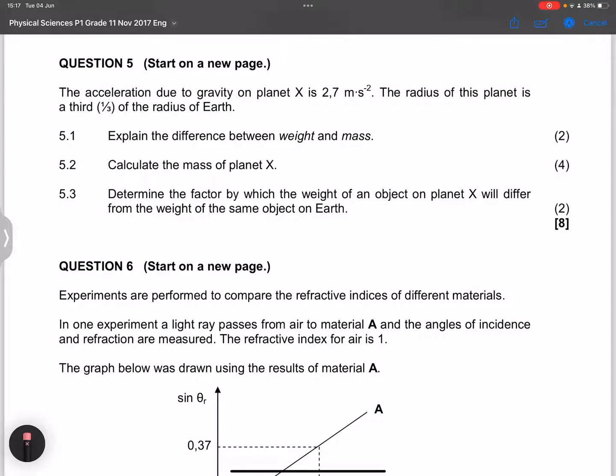So weight is the measure of the force of attraction that the Earth exerts on a body. And we know that mass is the measure of a body's inertia. Or we can say that mass is the measure of matter, of the amount of matter in a substance.